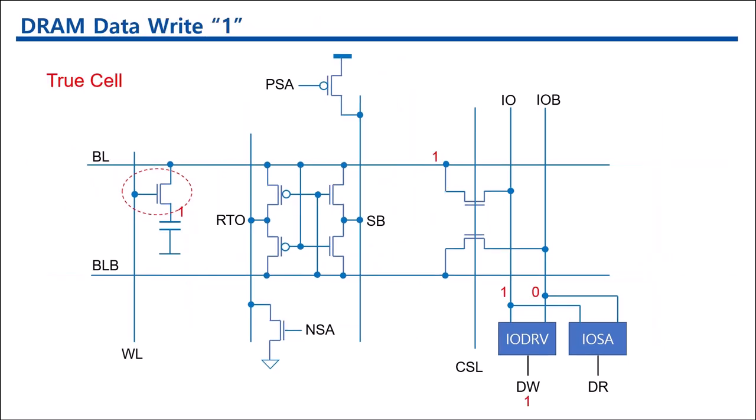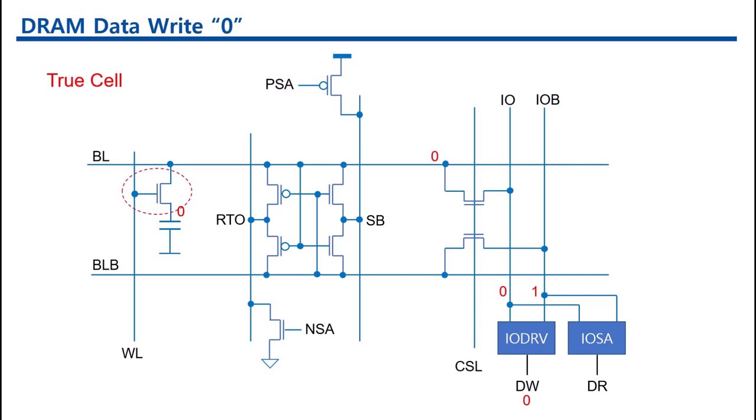When the DW level is 1, I-O driver drives I-O line to high and I-O bar to low. For the true cell, the BitLine is connected to the I-O line and the cell data becomes 1. When the DW level is 0, then the cell data becomes 0.